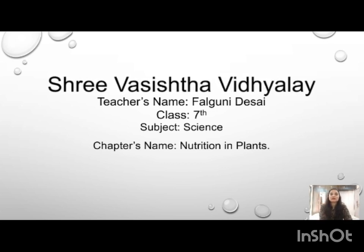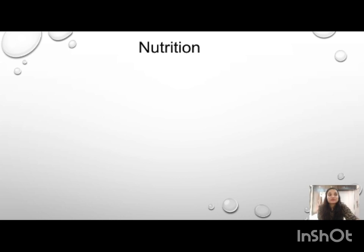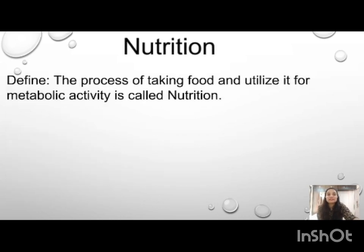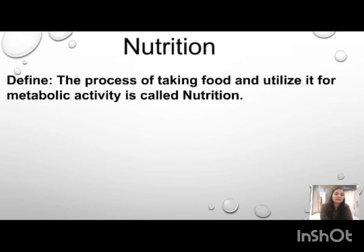In this chapter we will see the types of nutrition and some of the organisms which are conducting this type of nutrition. First we will see the definition of nutrition. The process of taking food and utilizing it for metabolic activity is called nutrition. After digesting food, whatever energy is released, we use it for various metabolic activities.